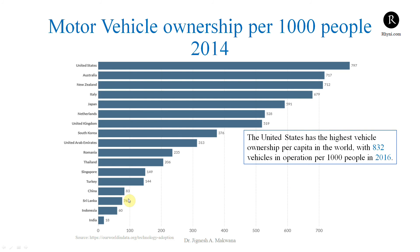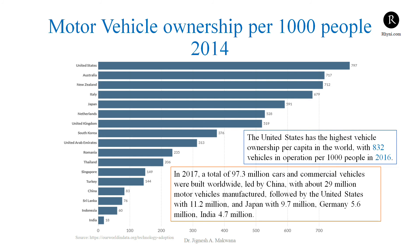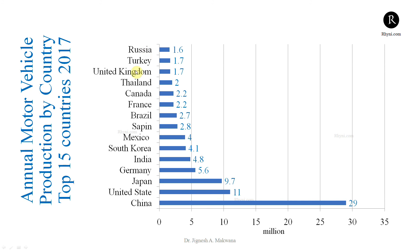If we look at manufacturing and production, China's population is much higher and China is currently leading the world in manufacturing motor vehicles. In 2017, a total of 97.3 million cars and commercial vehicles were built worldwide. China is leading with 29 million motor vehicles manufactured out of 97.3 million, followed by the US — next to China but less than half — then Japan at 11.2 million, Germany, and other countries. We can look at the graph for the top 15 countries in motor vehicle manufacturing.